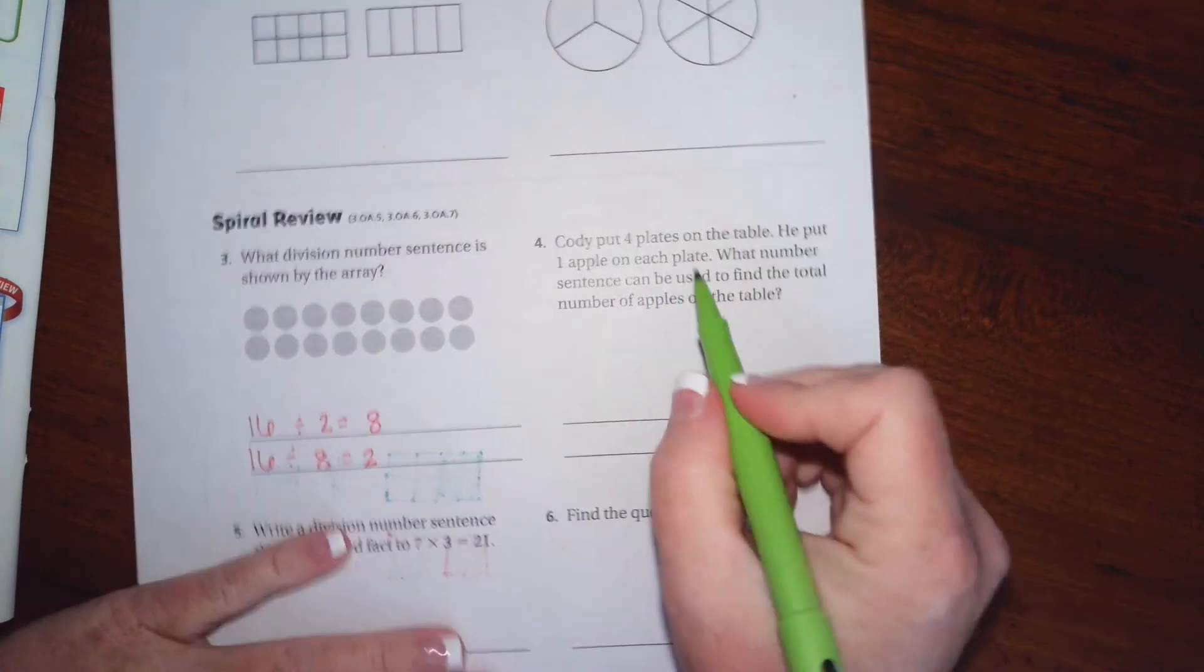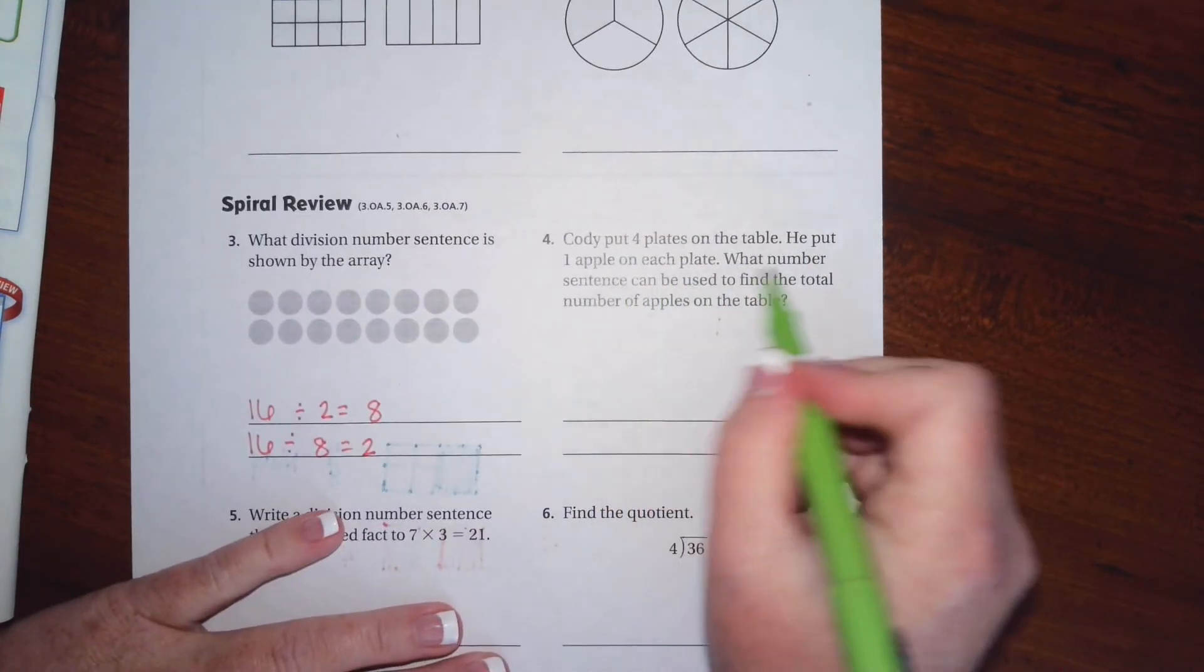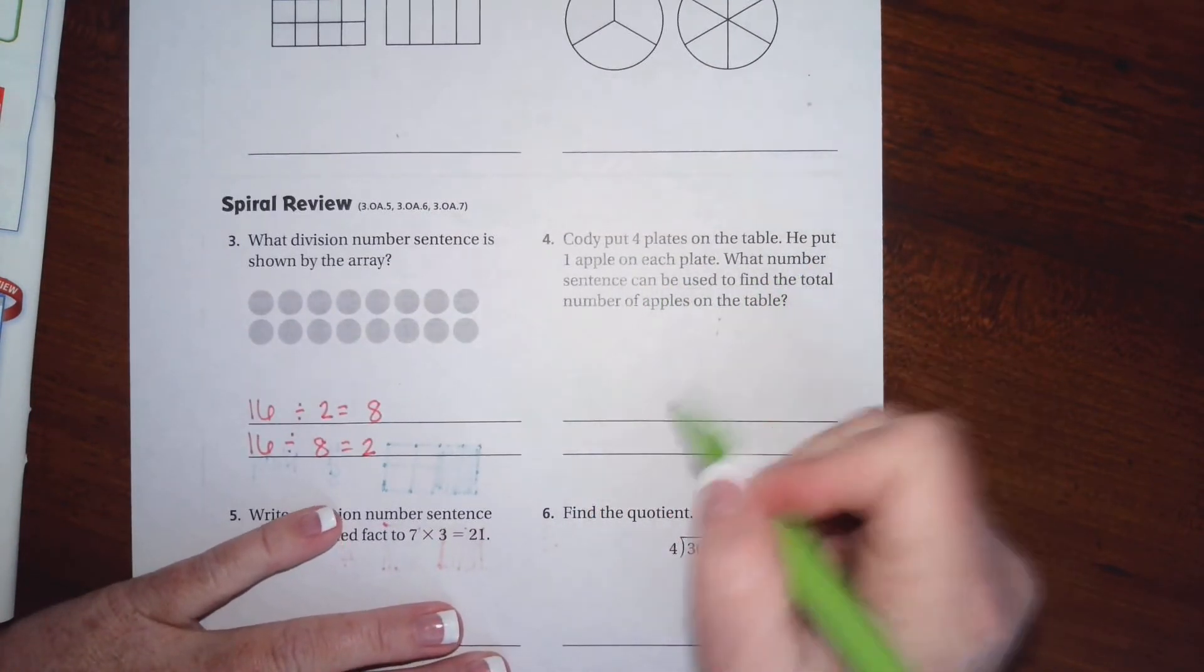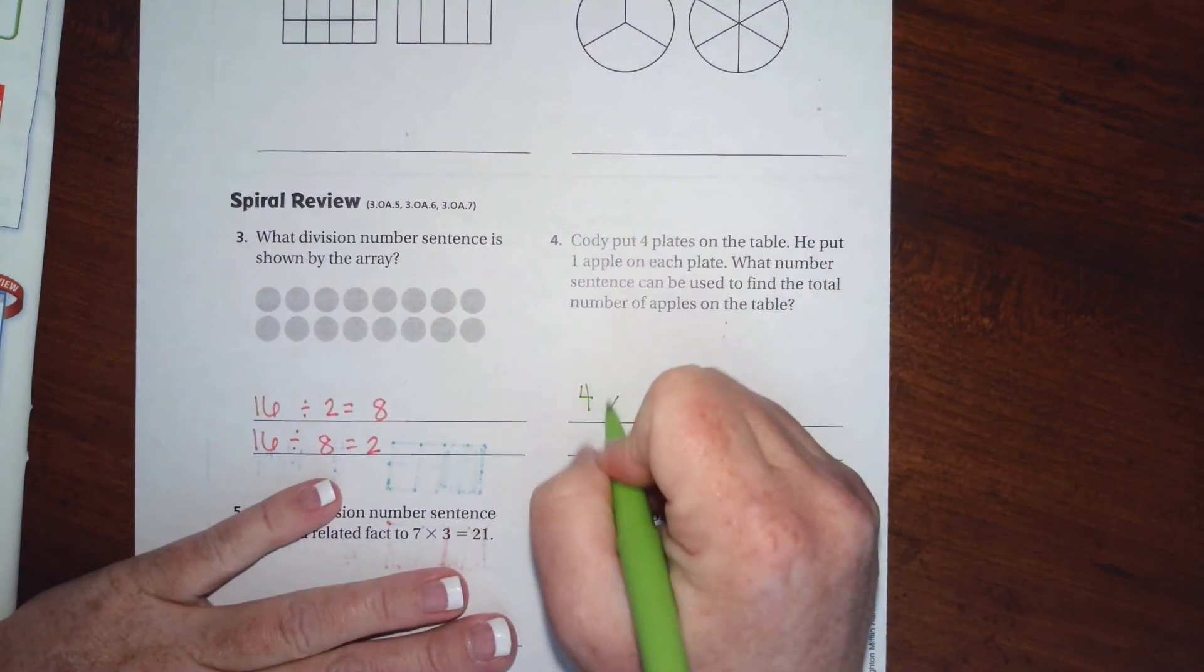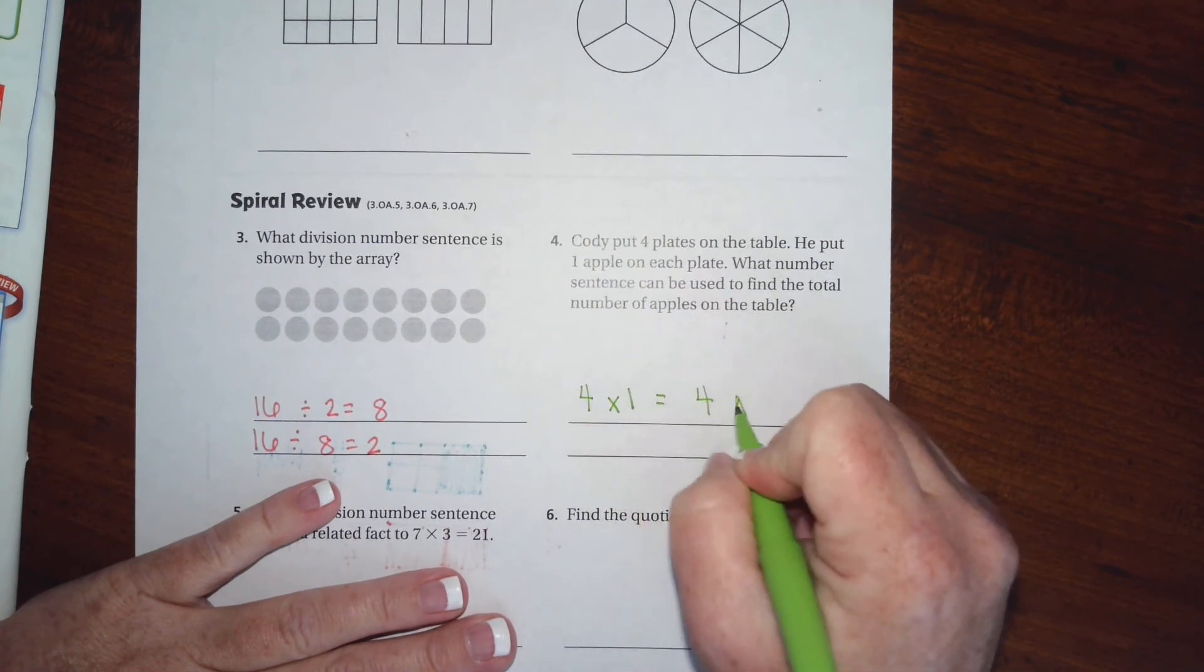He put four plates on the table. He put one apple on each plate. What's the number sentence that can be used to find the total number of apples on the table? Well, four plates, one apple on each plate is four apples. Four times one equals four.